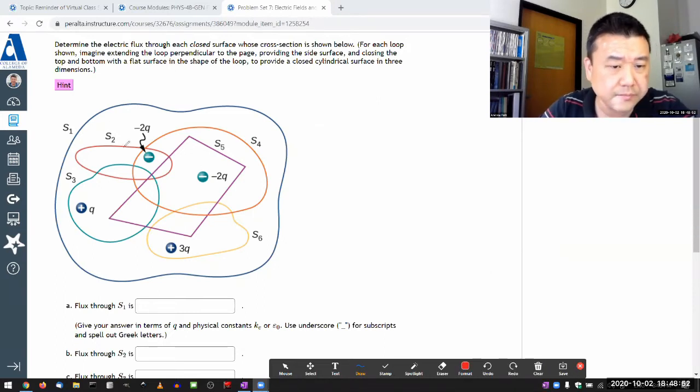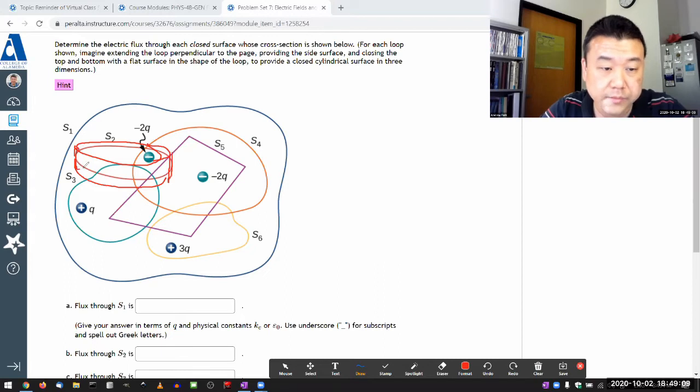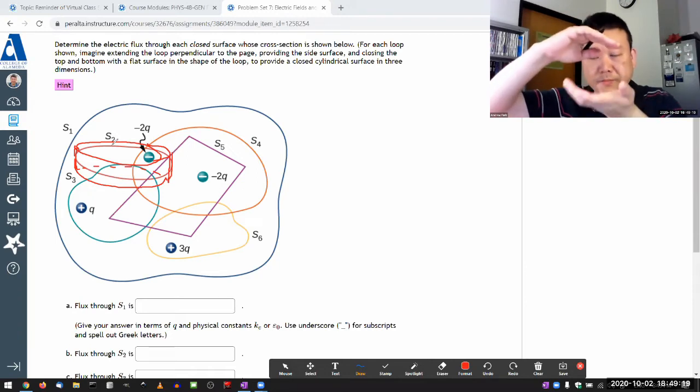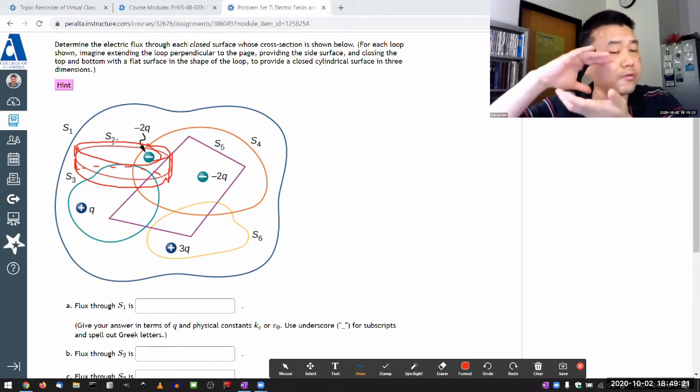Let me use S2 as an example. This is a cross section, meaning you have to imagine a cylindrical volume that extends above and below that loop. This closed cylindrical volume encloses anything that this loop encloses charge-wise. I'm just covering enough space above and below to be able to say that I'm enclosing a charge.